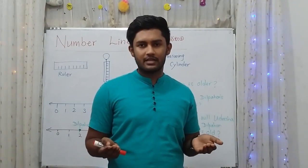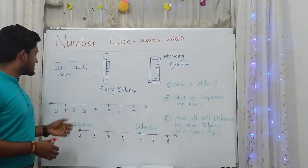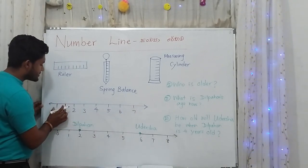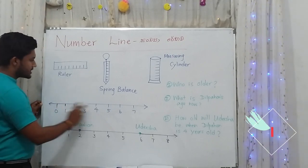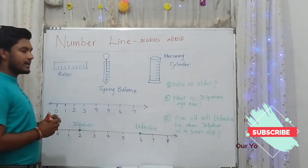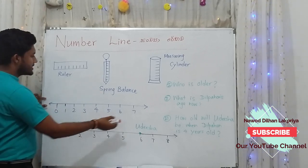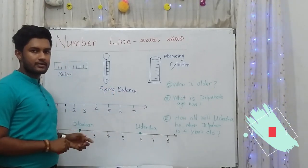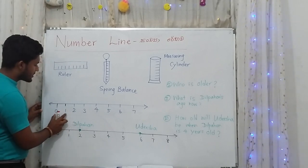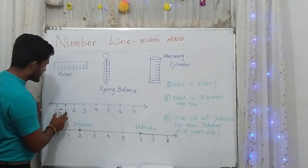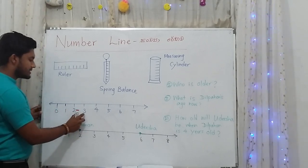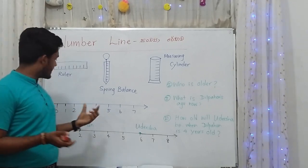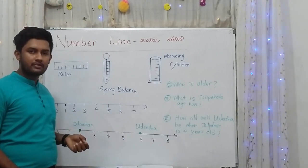We can draw a number line by drawing a straight line, keeping equal spaces between two numbers, and putting two arrow marks on either side. The gap between two numbers must be equal — you can use two squares each time to maintain equal spacing.